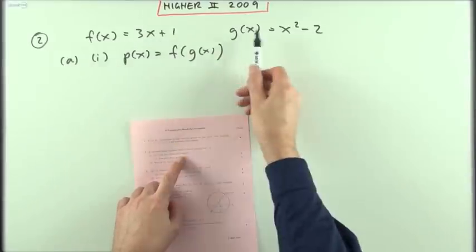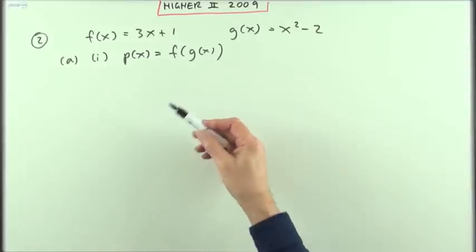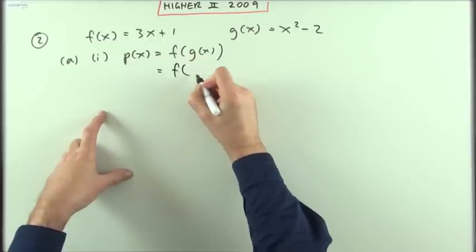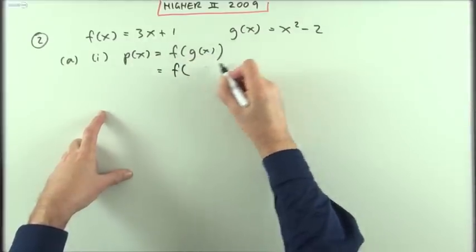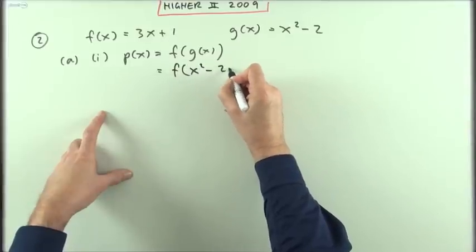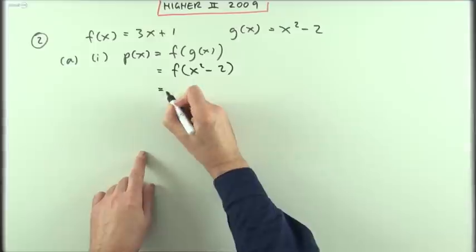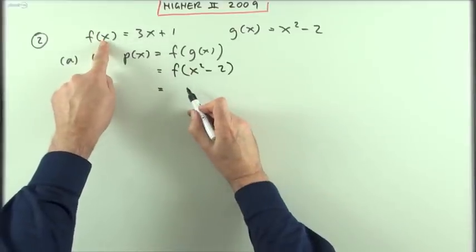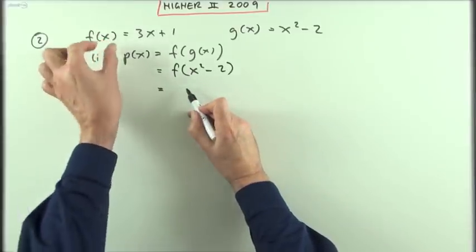First, p(x) equals f of g(x). What does g(x) do to whatever it gets? It gives you x squared minus two if you put an x into it. What does f do to anything it gets hold of? You have to think: what does it do to the content of this bracket?